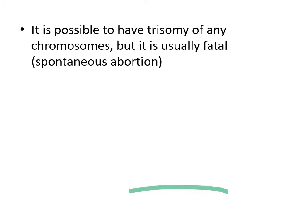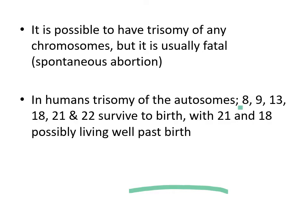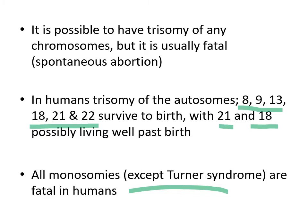This non-disjunction event could happen with any chromosome, creating trisomy of any number of chromosomes. However, most are fatal and the zygote isn't going to survive for very long. Certain chromosomes — 8, 9, 13, 18, 21, and 22 — are able to survive at least until birth. If it's trisomy 21 or 18, the individual will be able to survive well past birth. All monosomies except Turner syndrome are going to be fatal — any time a chromosome is missing, that genetic information isn't there and the zygote will not survive, except for Turner syndrome.